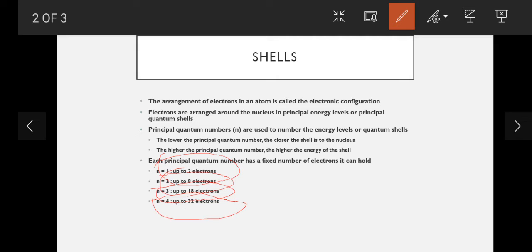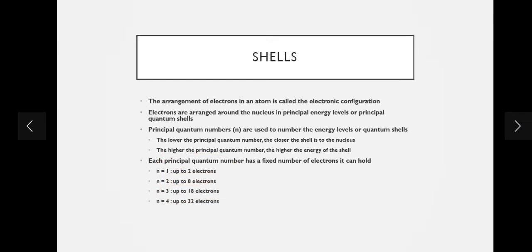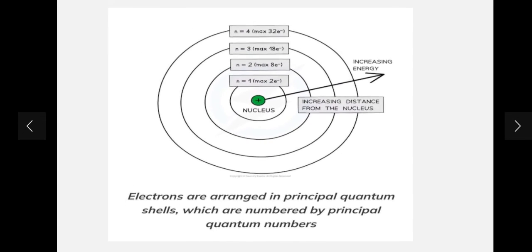To make things easier, here is a diagrammatic snapshot of how electrons are arranged around the nucleus — showing the principal quantum numbers and how everything works. The previous points are all summarized in this diagram. As we move further away from the nucleus, the energy increases: n=1 holds max 2 electrons, n=2 up to 8, n=3 up to 18, and n=4 up to 32. The number of electrons keeps increasing with each successive shell.